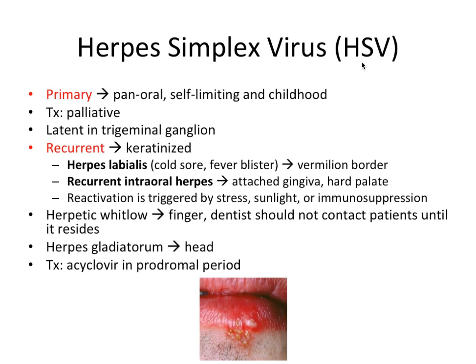So let's start with herpes simplex virus — HSV for short. I have these terms in red because they're very important to distinguish the type of infection you're getting from the herpes virus. The primary herpes simplex virus infection is when you're getting it for the very first time. This condition can occur pan-orally, meaning anywhere in and around the mouth. It's self-limiting — it will go away on its own — and it occurs mostly in childhood. Treatment is palliative, focused on calming symptoms with rinses that help with the pain, because it's a very painful condition.